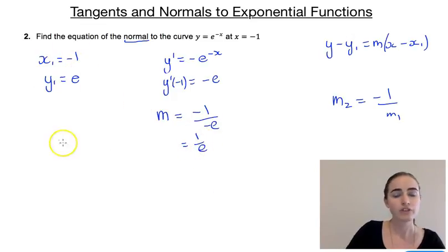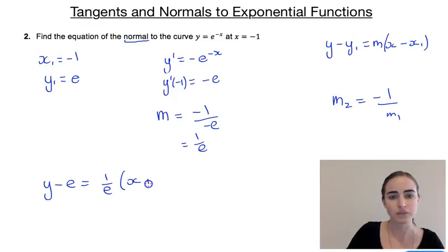So now that we've got those three pieces of information, we can put it in there. So we'll have y minus e equals 1 over e outside of x minus minus 1, so plus 1. Now we're going to go through and multiply everything by e. So we'll have e, y minus e squared equals x plus 1. And then we'll just rearrange it.